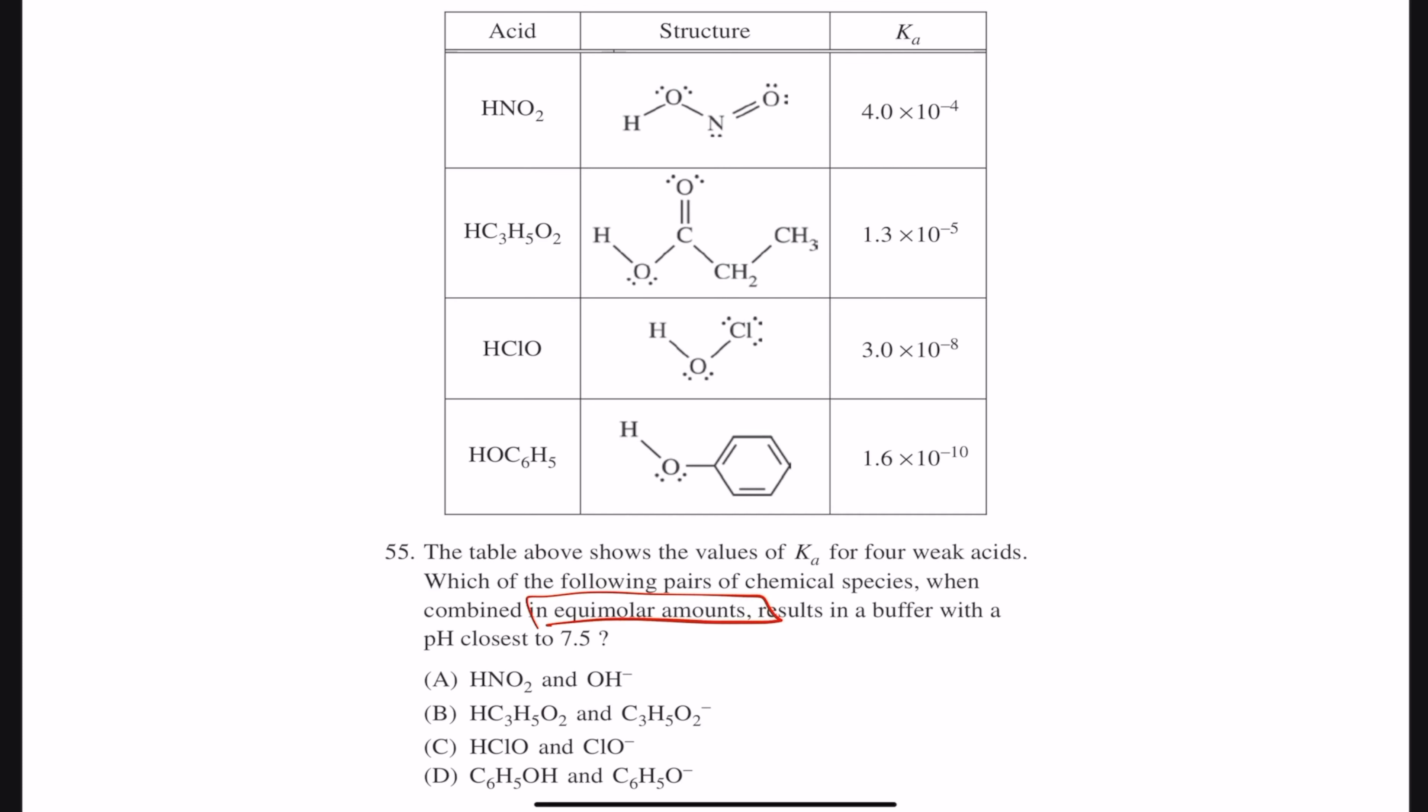...will result in a buffer with a pH closest to 7.5. Now, we are talking about buffer, and we're talking about something that would be close to pH of 7.5, and we're given all these Ka values.